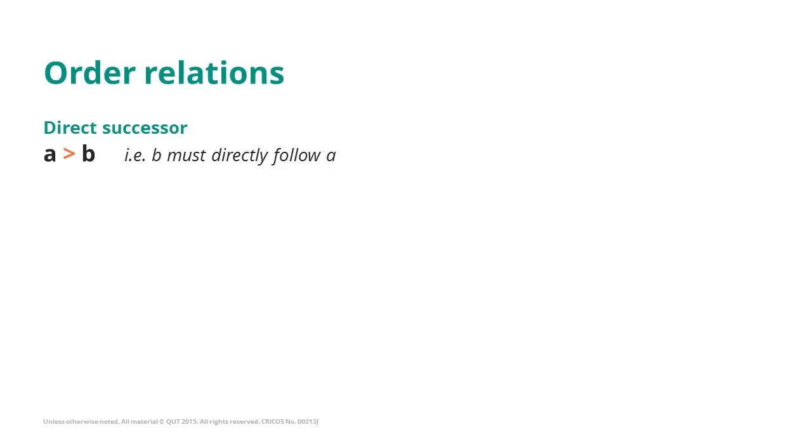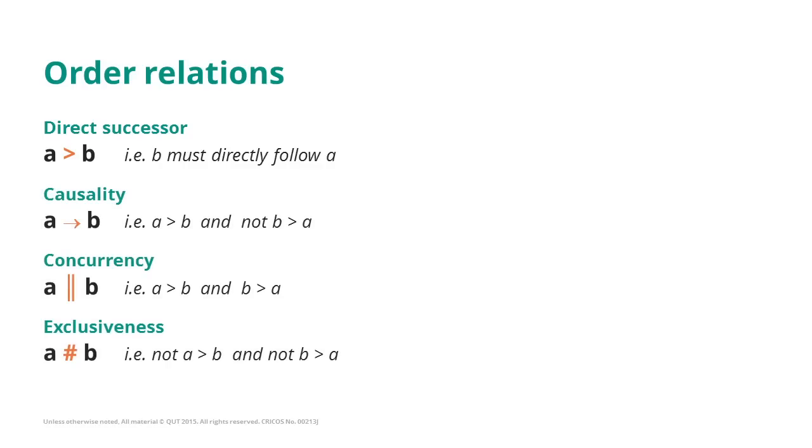Based on the direct successor relationship we can identify more advanced relationships. They are called causality, concurrency and exclusiveness. Let's start with causality.